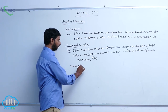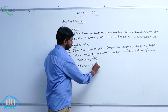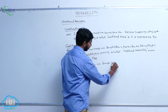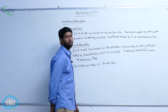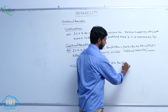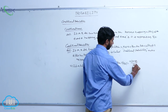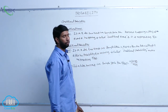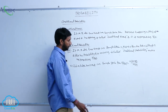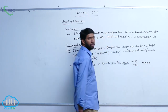If A and B are two events in a sample space, then P of B given A is equal to N of A intersection B divided by N of A, where N of A is not equal to 0.